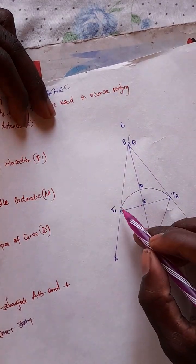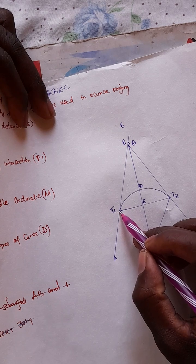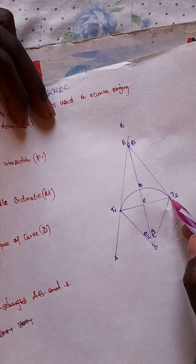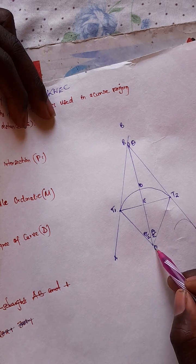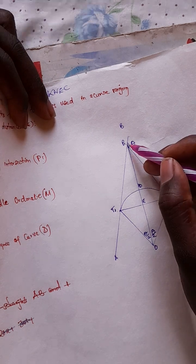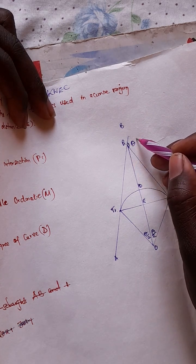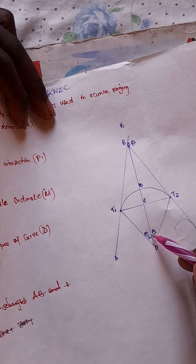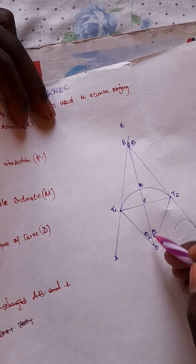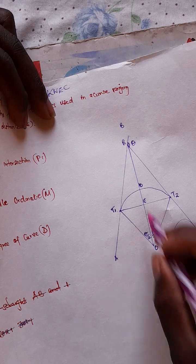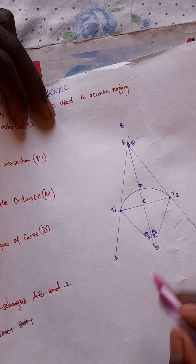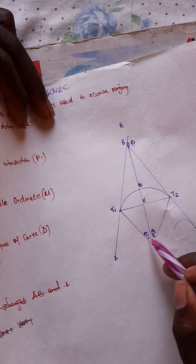Here is T1, the first tangent point, and T2. Here is the point of intersection. If the deflection angle is maybe 60 degrees, then when you put a perpendicular line between them, it will divide the direction angle into two equal halves.